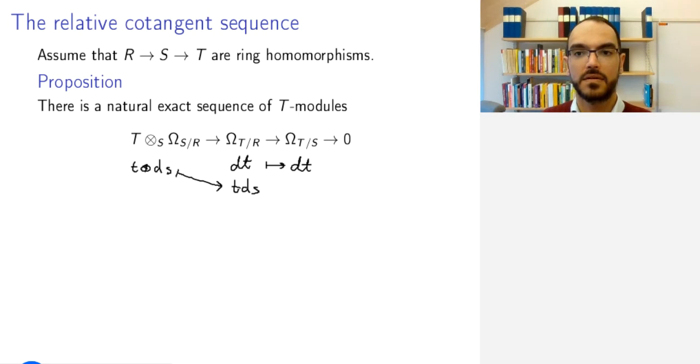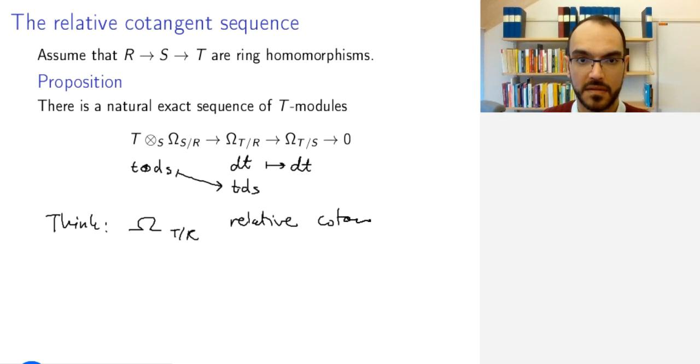The geometric interpretation is like this. We think of these omega T-R as some relative cotangent space. Briefly, the geometric idea is, suppose I have the following situation.